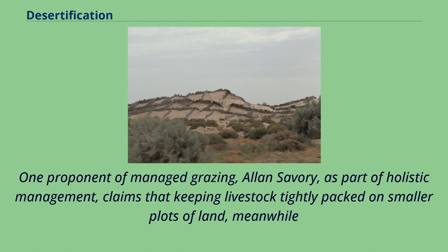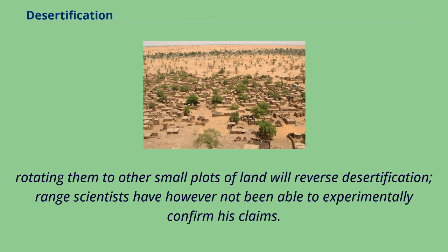One proponent of managed grazing, Alan Savory, as part of holistic management, claims that keeping livestock tightly packed on smaller plots of land, then rotating them to other small plots, will reverse desertification. Range scientists have however not been able to experimentally confirm his claims.